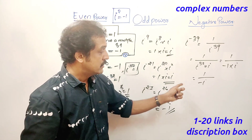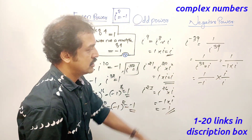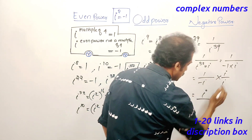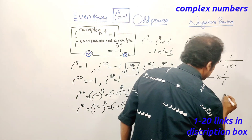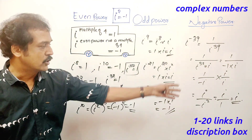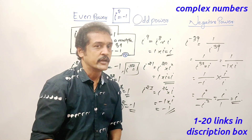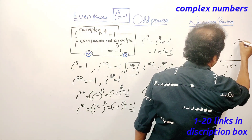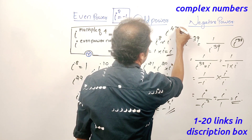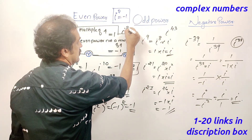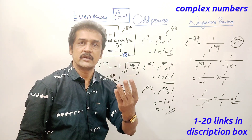To write in standard form, the denominator i must be rationalized. Multiply numerator and denominator: i squared is minus 1. That gives i by 1, which is 0 plus i. So the standard form answer is 0 plus i.